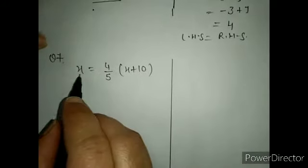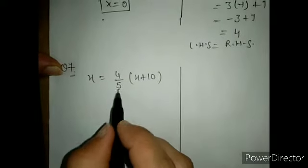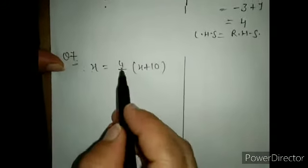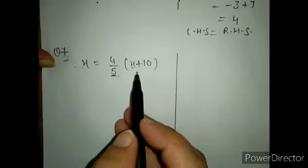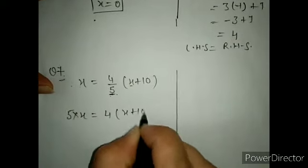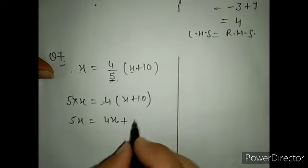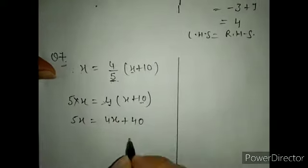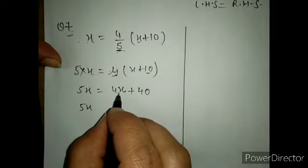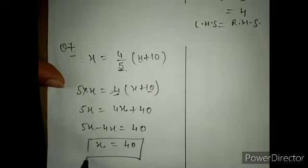Now come to question number 7. Given: x equals 4/5 times (x plus 10). This is a lengthy method but I will help you. The 5 is dividing on the right hand side; if we bring it to the left side it will multiply. So it becomes 5x equals 4(x plus 10). Open the bracket: 4 times x is 4x, and 4 times 10 is 40 — don't forget 4 also multiplies with 10. So 5x equals 4x plus 40. 5x minus 4x equals 40, so x equals 40.